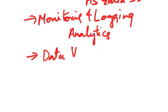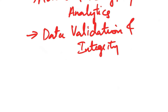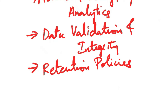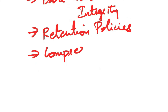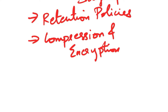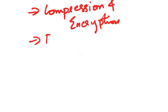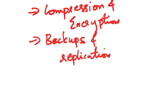For data validation and integrity, implement data validation mechanisms to ensure data integrity during archiving and retrieval processes, and regularly perform data integrity checks to identify and address any potential issues. Define and enforce data retention policies to comply with regulatory requirements or organizational policies for data archiving. Consider compressing data before archiving to reduce storage costs further, and enable encryption at rest to secure data stored in Azure Blob Storage.